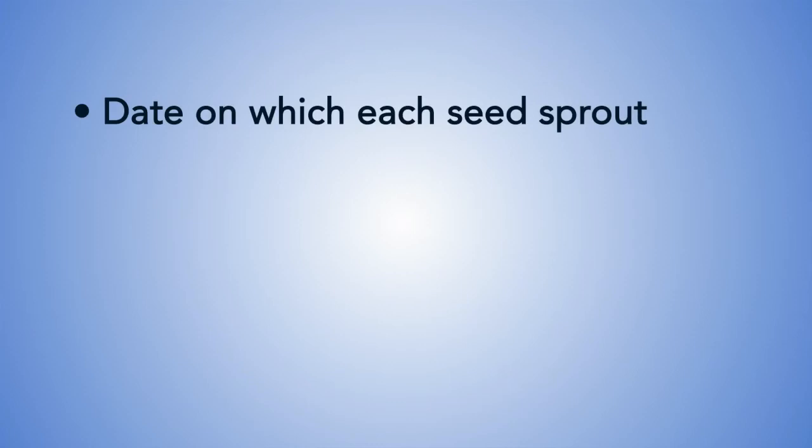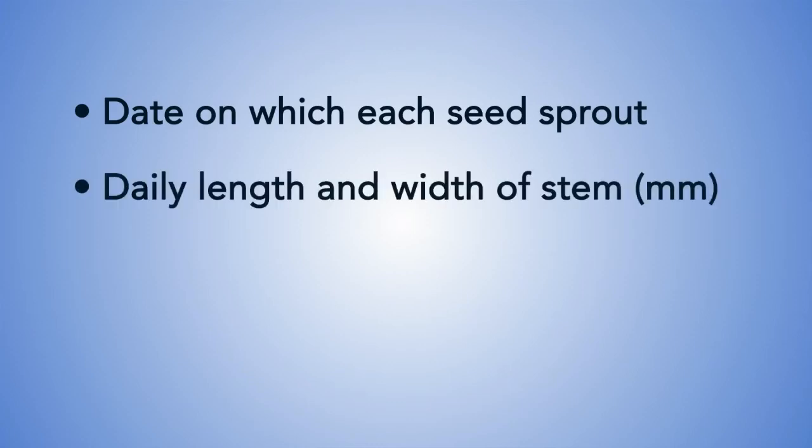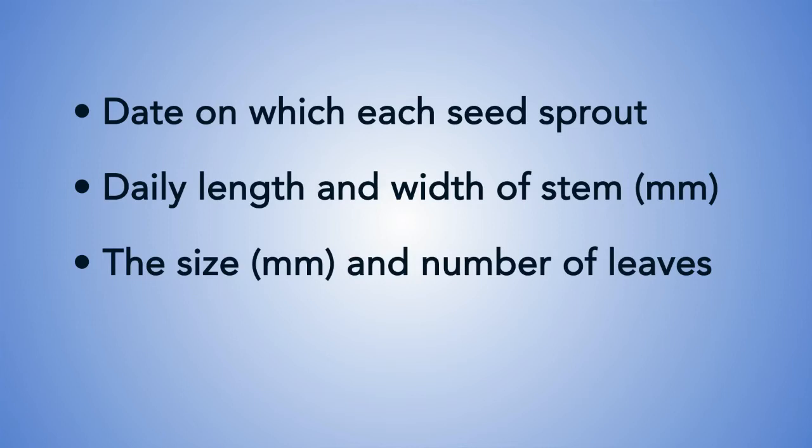At this point, make sure that temperature is nearly the same as possible for both sets of plants. Water them regularly, making sure that all plants get the same amount of water. Observe these plants for the next four weeks. During the period of observation, keep an accurate daily record of the conditions of each seedling. Take note of: the date on which the seeds sprout, the daily length and width of stem in millimeters, the size in millimeters, and number of leaves.